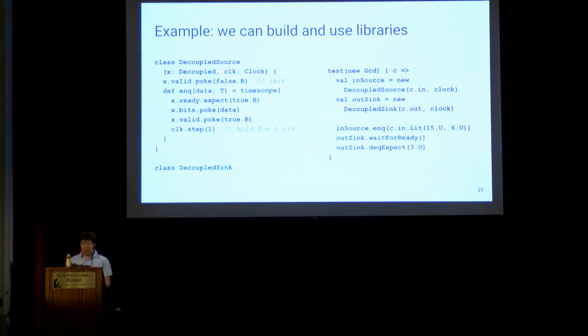Here's the second example that shows the decoupled source test abstraction, which allows enqueue on a decoupled IO object, and its use in GCD. This basically turns the previous GCD example into effectively three lines of core test logic: enqueue, wait for ready, and dequeue expect. Short of building GCD specific abstractions, which we could also do, this is probably about as compact as it gets, making tests short and sweet.